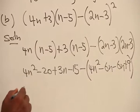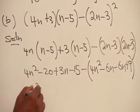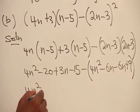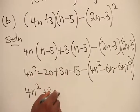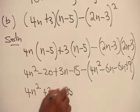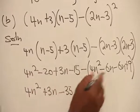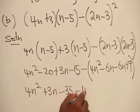So here we have 4n squared and then we have plus 3n, minus 20 minus 15 is minus 35. Then open the bracket here, minus 4n squared.